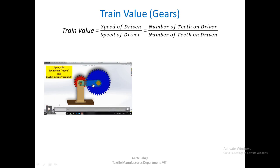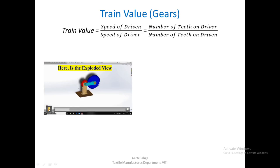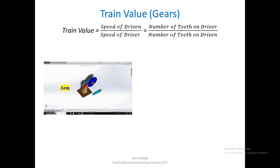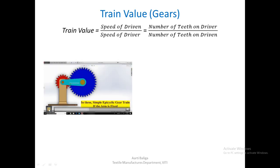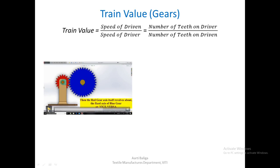In the gear set shown, the red wheel drives the blue wheel. If there is no arm, this is a simple set of normal gears, one driving the other. We can observe the difference when the arm is introduced versus when it is absent.